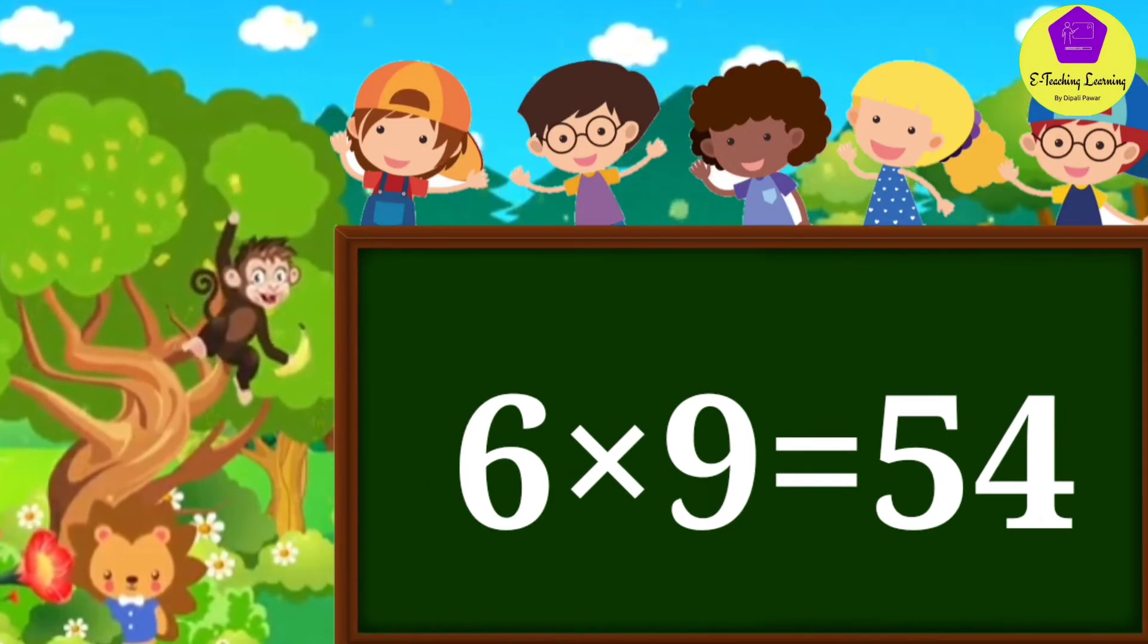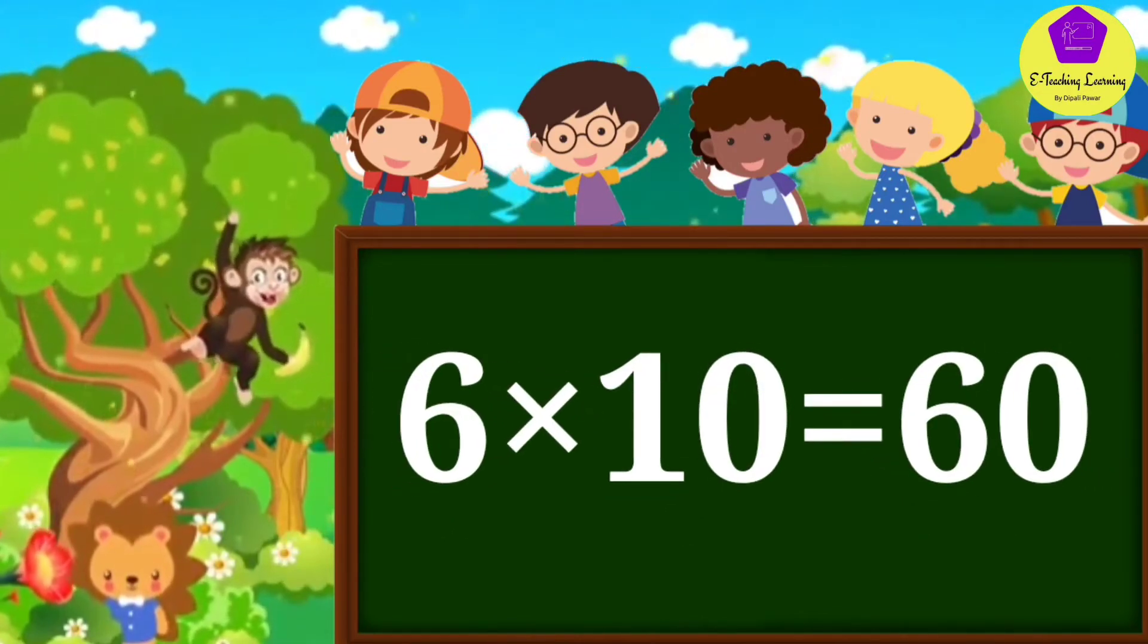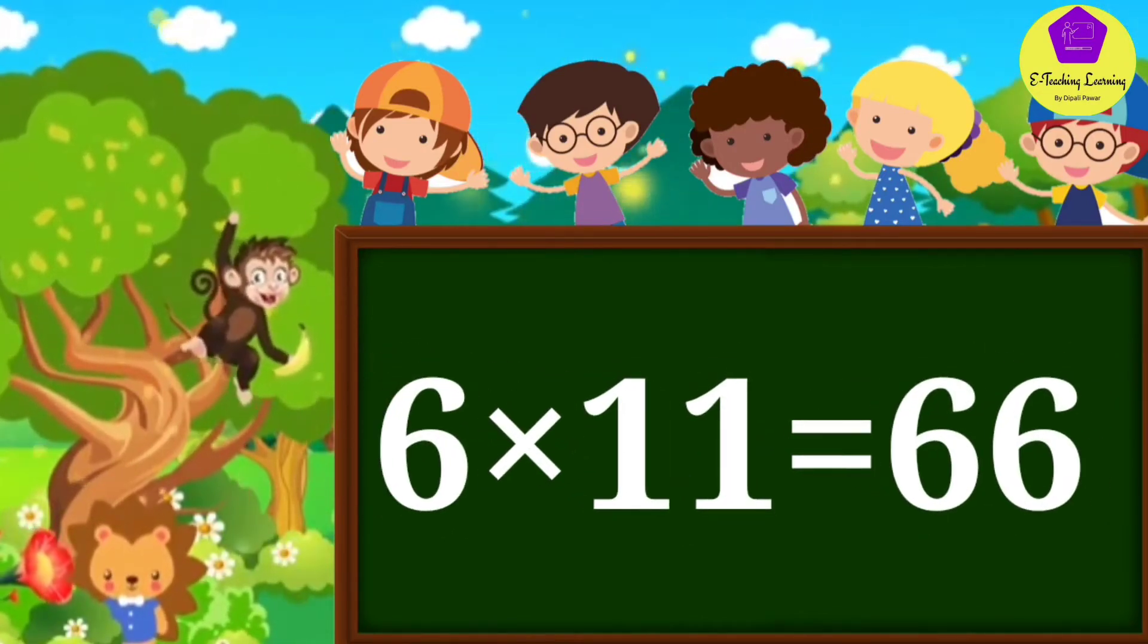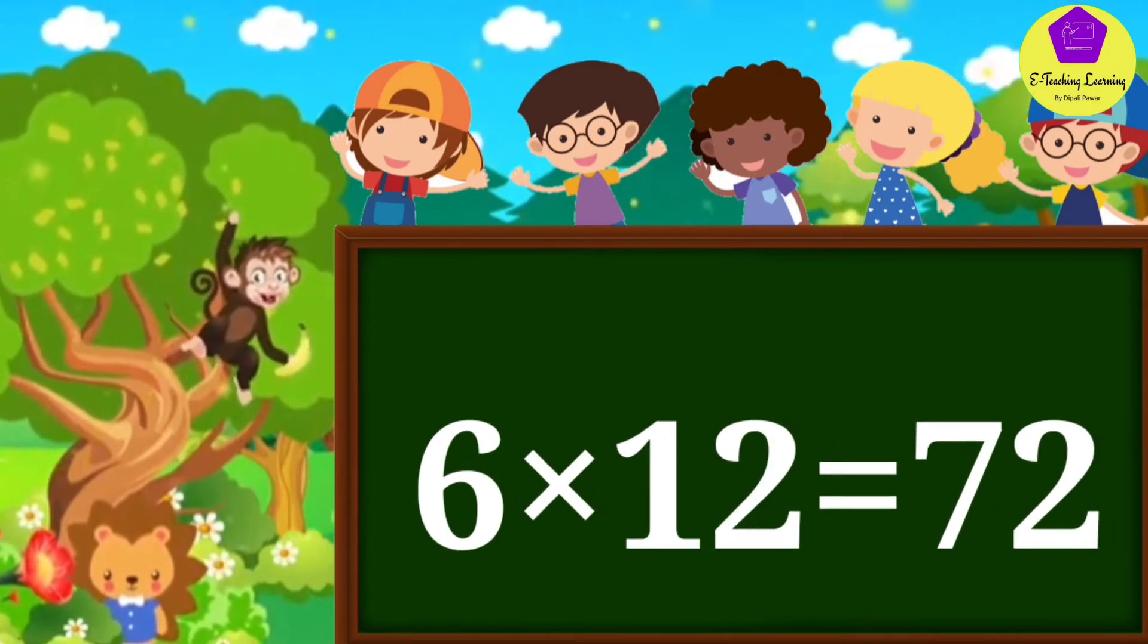Six nines are fifty-four, six tens are sixty, six elevens are sixty-six, six twelves are seventy-two.